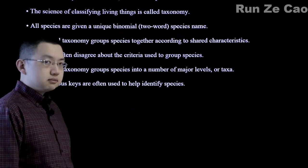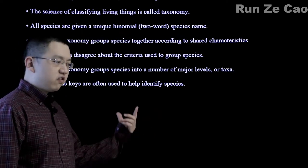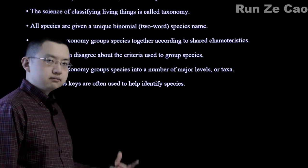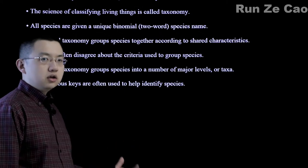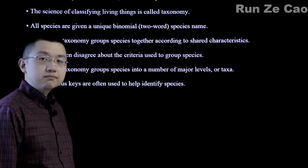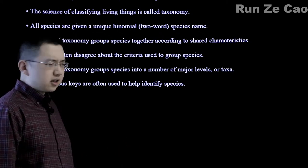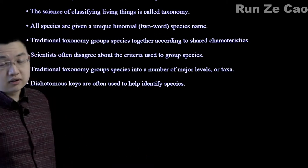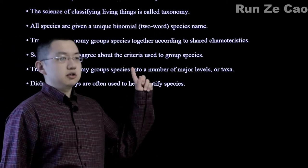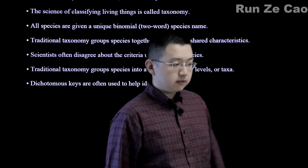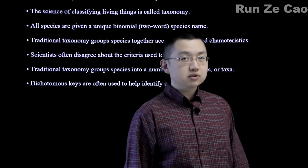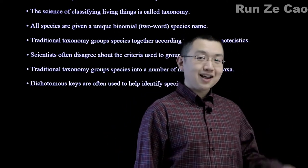Traditional taxonomy groups species into major levels: Linnaeus had kingdoms, phylum, class, order, family, genus, and species — then subspecies if relevant, for example E. obsoleta obsoleta for a certain group of snakes.